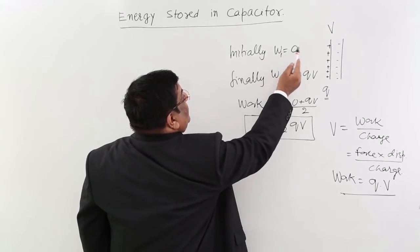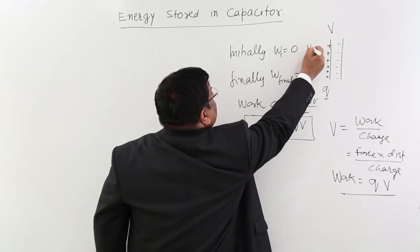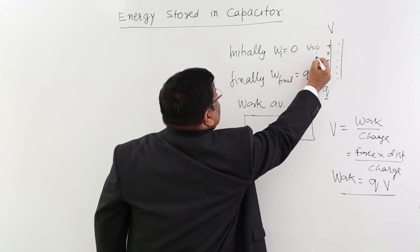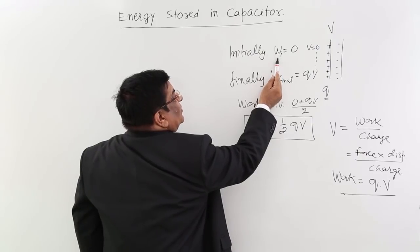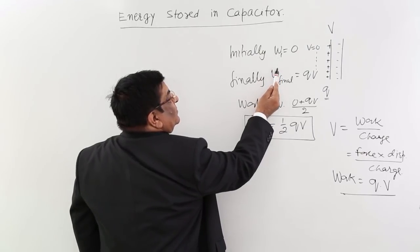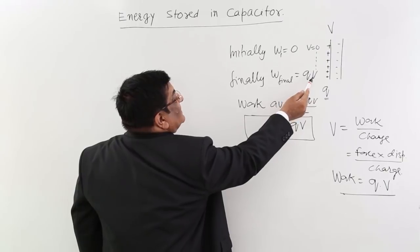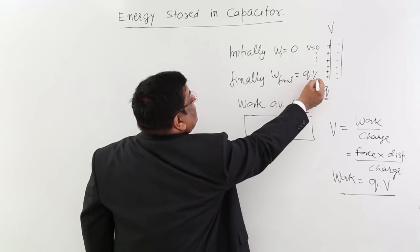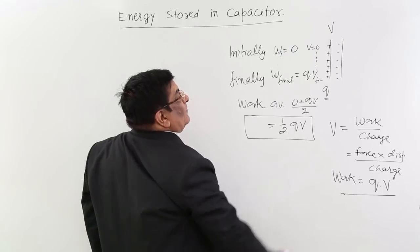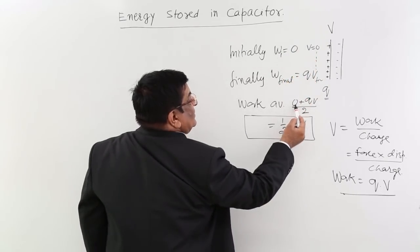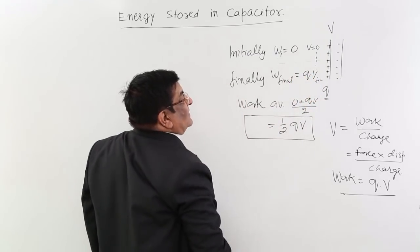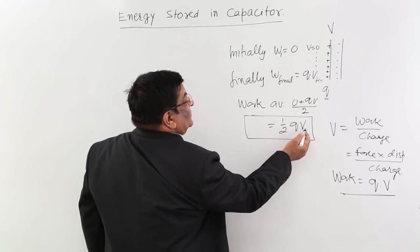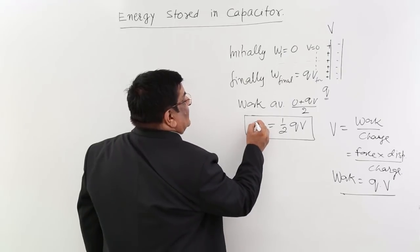This is the average work done for the full value of V. So this value of V, which was 0 initially, increased every time I was doing W2, W3, W4, and final W was Q into V. This is the final V. So initial work done 0, final work done QV, and what will be the average work done? That will be half Q into V. This is energy.